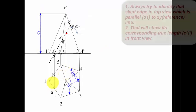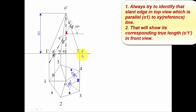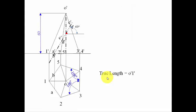There are five slant edges: O1, O2, O3, O4 and O5. Out of these, you need to pick a slant edge which is absolutely parallel to the XY line. The O1 slant edge is absolutely parallel to the XY line, so its corresponding front view — O dash to 1 dash — will show the true length. Therefore, the true length is O dash to 1 dash.